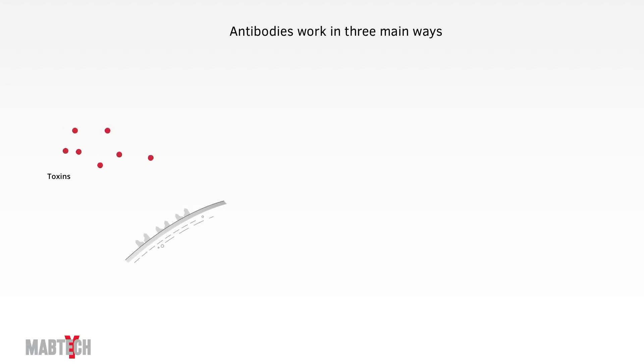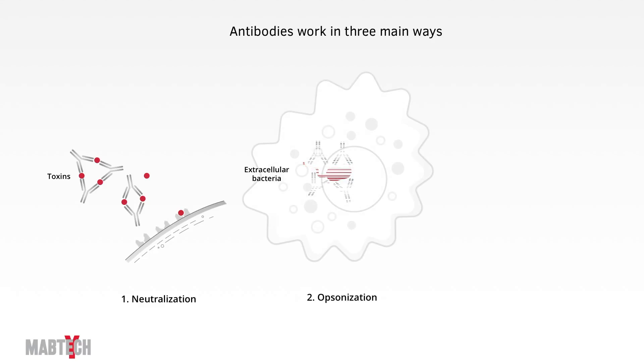Depending on the danger at hand, antibodies may work in three main ways. Toxins or viruses can be neutralized by antibodies. Extracellular bacteria can be opsonized by antibodies. The bacteria are too big to be neutralized, but being covered by antibodies makes them look extra yummy to macrophages. The third main function is to activate the complement system, which makes the pathogen look even more yummy. In addition, the complement system can attract additional macrophages and can even directly destroy the pathogen by disrupting its cell membrane.